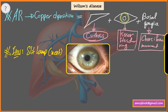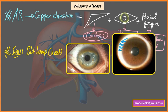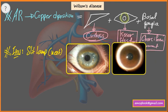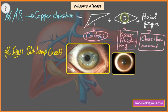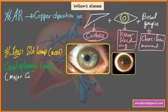If a slit lamp test is not available in the answer choices, then you should choose ceruloplasmin level, which is the major copper-carrying protein in the blood. The best investigation — the investigation of choice — for Wilson disease is liver biopsy.